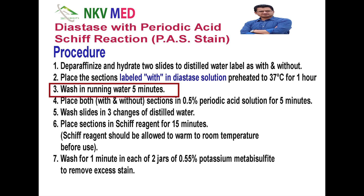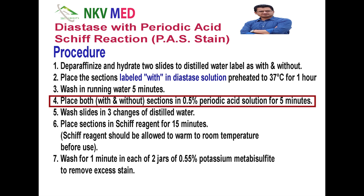The next step is to wash in running tap water for 5 minutes. While washing, after the glycogen is broken down, all the smaller sugars like glucose will wash out from the tissue section. Then in the next stage, both sections — the one put into diastase solution and the one not in diastase solution — we will place both into the periodic acid solution for 5 minutes. Here the aldehyde groups will get exposed.